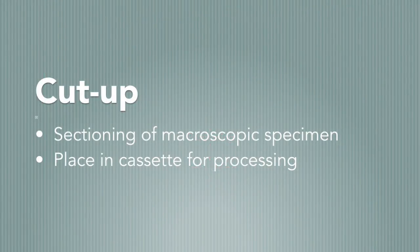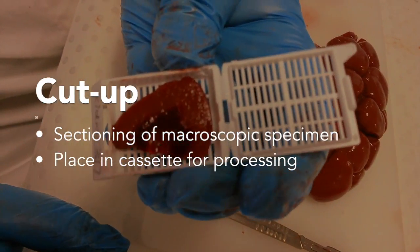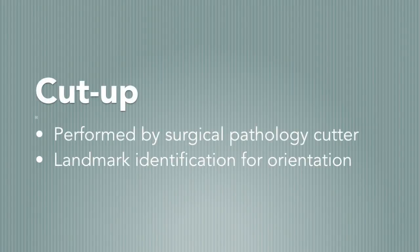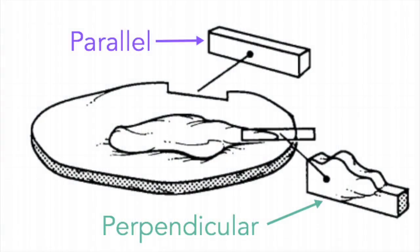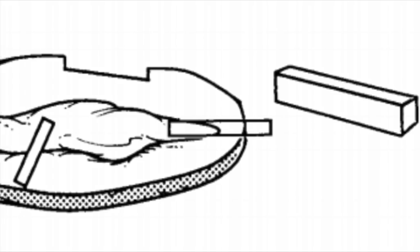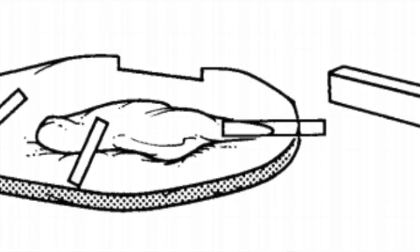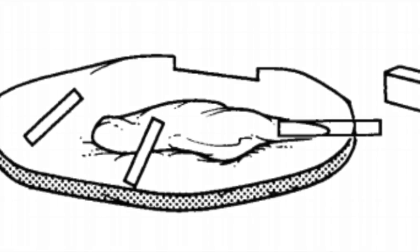Cut up refers to sectioning of the macroscopic specimen so it may be placed into specially designed cassettes for processing. Small samples are often placed directly into these cassettes, bisected or trimmed. This task is up to the surgical pathology cutter, who will identify anatomical landmarks for correct specimen orientation so appropriate sections can be taken. A perpendicular section shows how close a mass is to the margin, while parallel sections are used when the margin appears widely free of the area of interest. To maximise the amount of information that can be obtained from a tissue section, different areas of the specimen are sampled, as opposed to random, indiscriminate sampling.